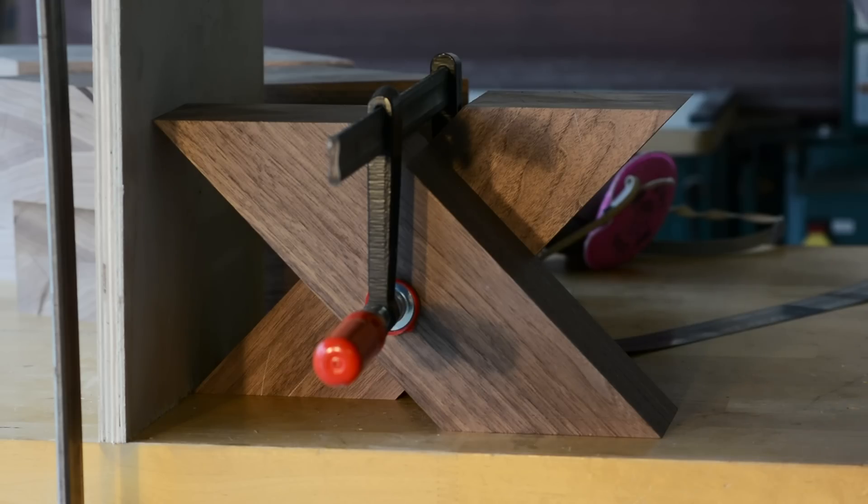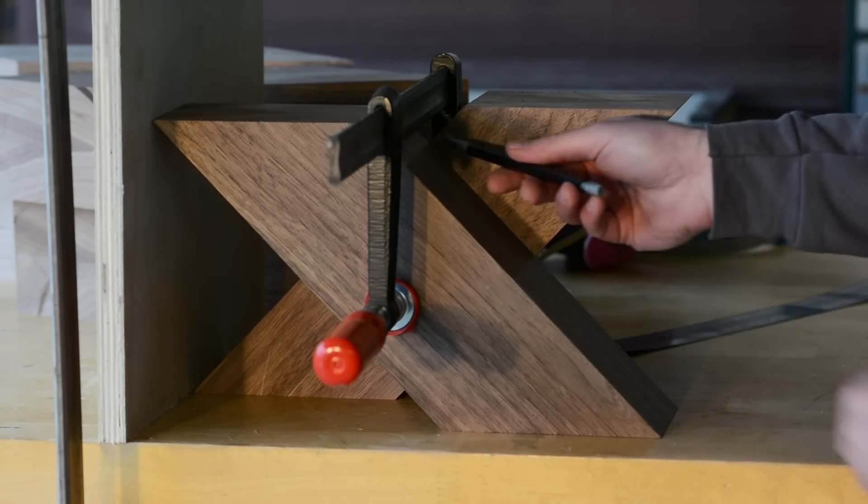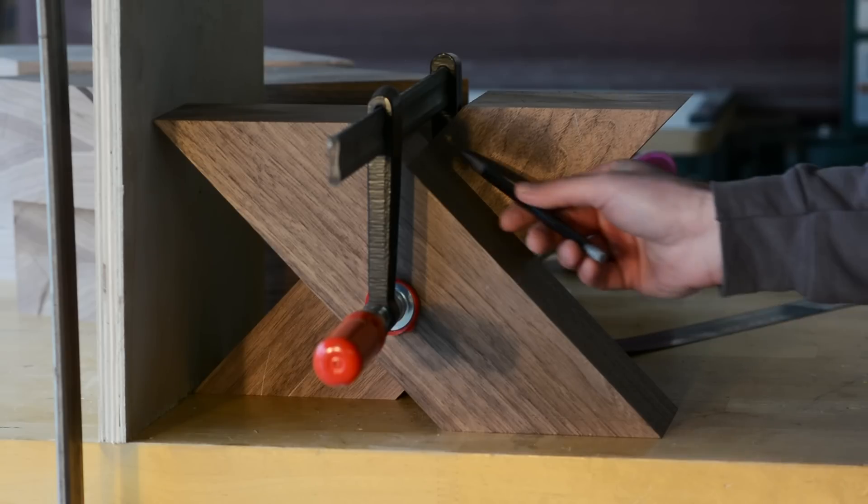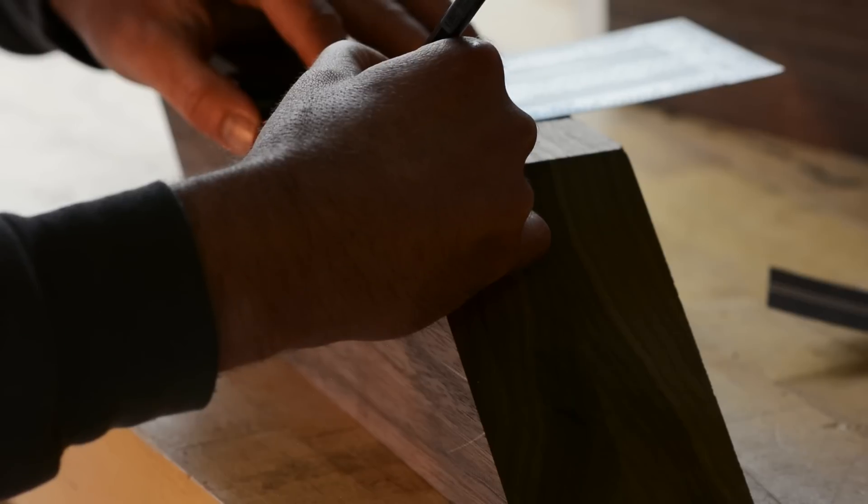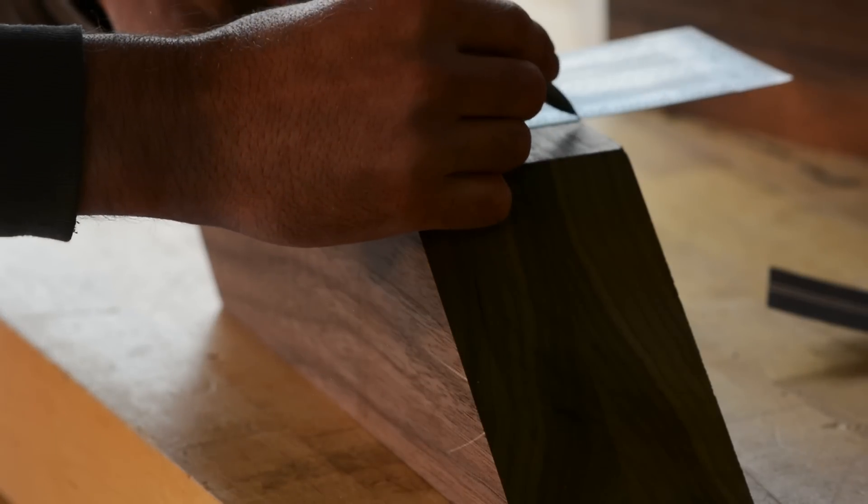Next I took two of the longer pieces and clamped them together at their centers so that I could make the X shape that sits at the dead center of the entire piece. Here I'm marking out some lines so that I can create a half lap to join these two pieces together.